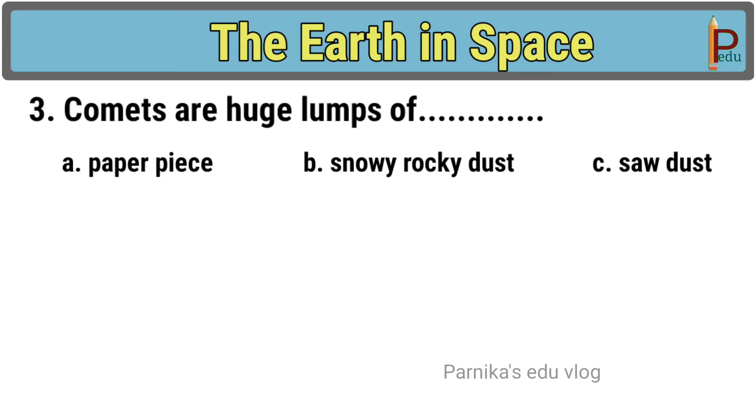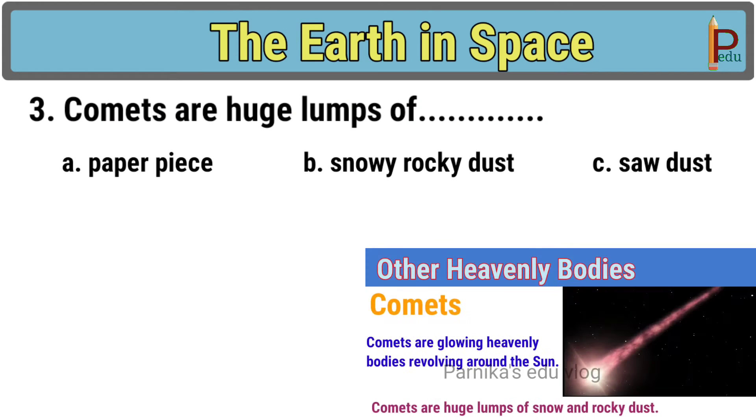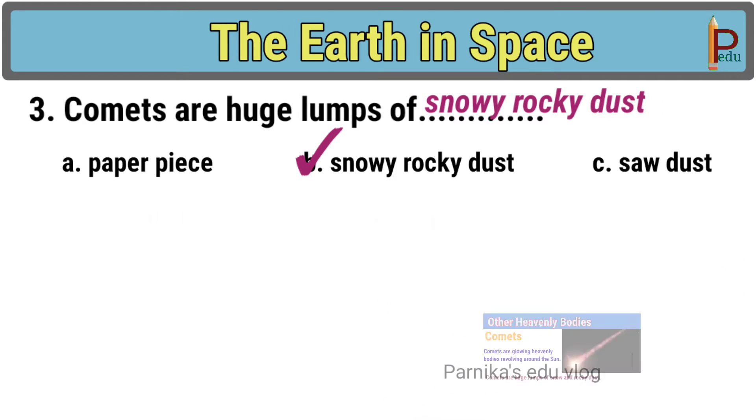Third one, comets are huge lumps of dash. The answer is B, snowy rocky dust.